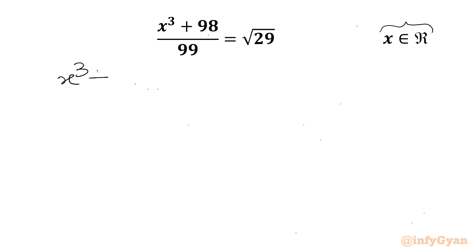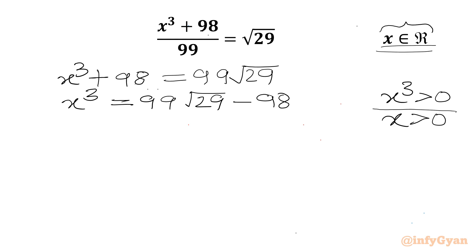I will write x cubed plus 98 equals 99 square root 29. Now we will subtract 98 from both sides, so x cubed equals 99 root 29 minus 98. Now x cubed is greater than 0, so for real x we will get x positive only.